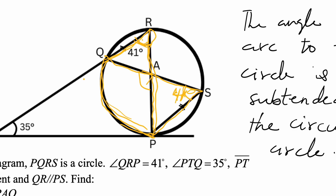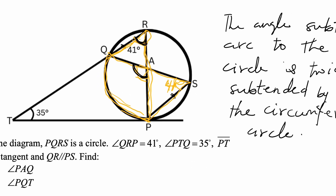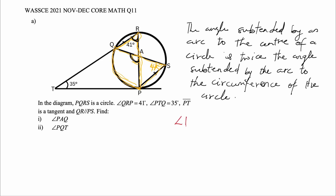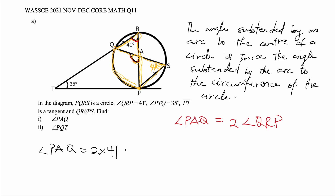But that is not our focus. Our focus is the central angle PAQ. We are saying that angle PAQ is twice the angle this arc subtends to the circumference, which is angle QRP equal to 41 degrees. So angle PAQ is equal to 2 times 41, which gives us 82 degrees.